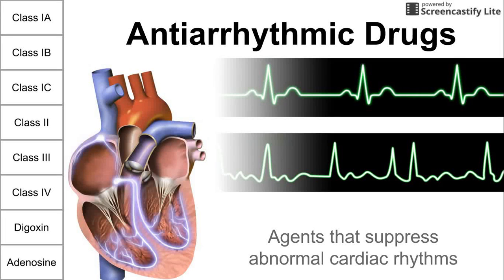This is a short video on anti-arrhythmic drugs, a class of drugs that suppress abnormal cardiac rhythms. On this first page, we have a picture of an abnormal cardiac rhythm — in this case, atrial fibrillation. The bottom EKG shows atrial fibrillation.